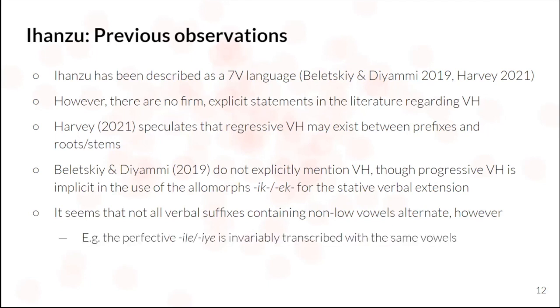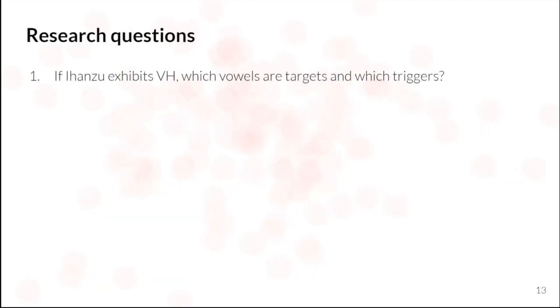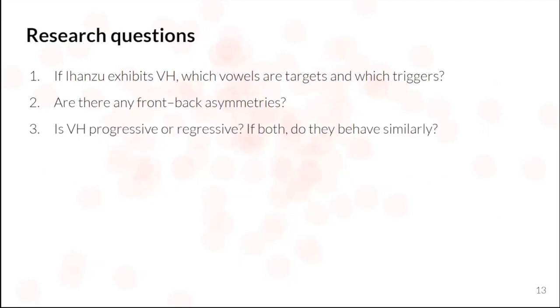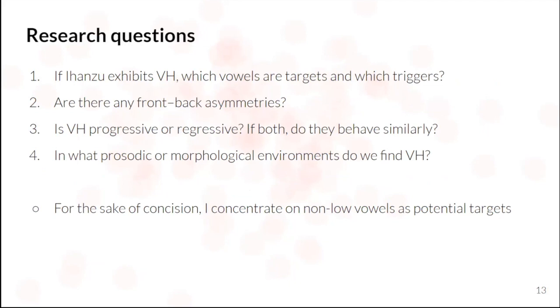So the perfective, I've seen invariably transcribed the first vowel as E, and the final verbal vowels A, E, which all have different grammatical functions, are also invariably transcribed as such. So this brings me then to the research questions of this particular project, which is, first of all, does Ihanzu exhibit vowel harmony? If so, what vowels are triggers, which are targets? Are there front-back asymmetries, as we commonly see? Is vowel harmony progressive or regressive? And if both, do they behave the same or different? And then in what prosodic and morphological environments do we get vowel harmony? And I should note here that for this question, I'm going to be concentrating on only non-low vowels as potential targets.